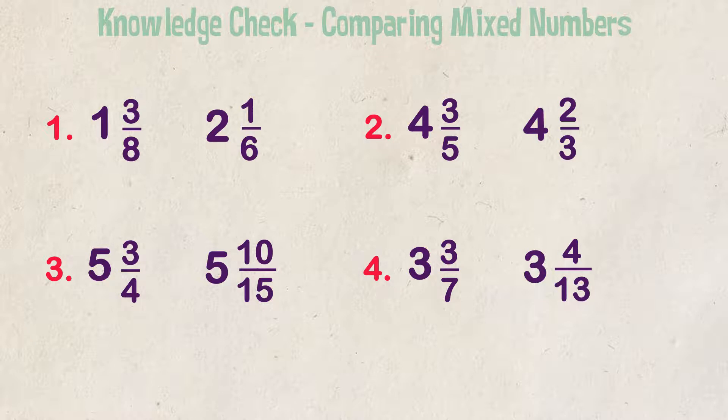Example 1. Compare 1 and 3 eighths to 2 and 1 sixth. I told you in the beginning, the first thing to do is look at the whole numbers. 2 is bigger than 1, so 2 and 1 sixth is greater than 1 and 3 eighths. Now, that's it for the easy ones.